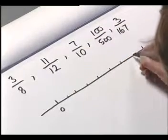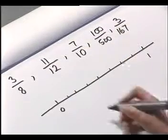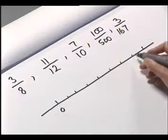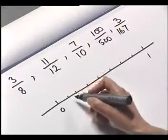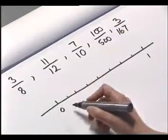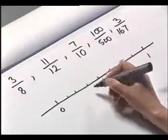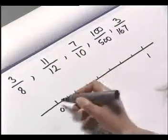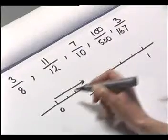Now obviously this is an illustration, so I'm not actually getting my ruler out to make sure I've got equal size pieces, but hopefully that's about right. So we've got eight pieces of equal size, and I'm going to take three of them — one, two, three eighths. That's where my three eighths will be.